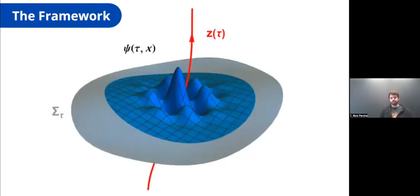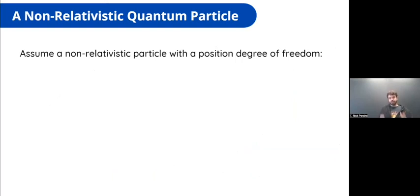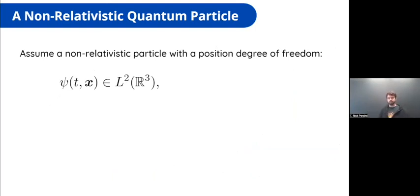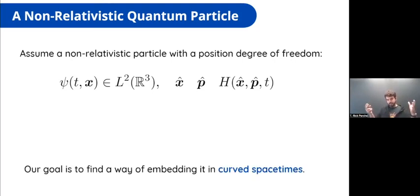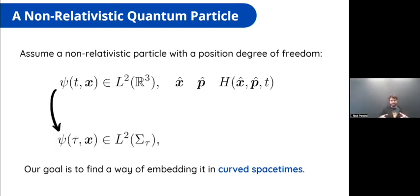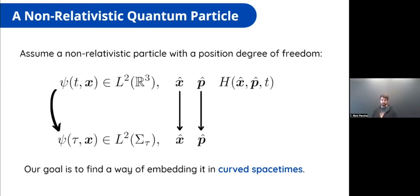Our goal now is to describe wave functions that are localized in curved spacetime. First, consider a non-relativistic particle with a position degree of freedom — a wave function living in the space of square-integrable functions with position and momentum operators, with dynamics prescribed by a Hamiltonian H that is a function of position and momentum operators and possibly an external time parameter. Our goal is to embed this theory in curved spacetime around the trajectory, defining wave functions in the space of square-integrable functions on each spatial slice, and then generalizing the position and momentum operators to curved spacetime.